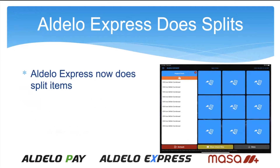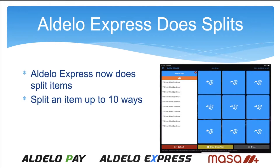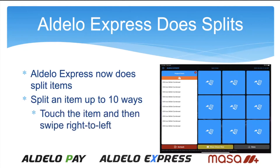We can now do up to 10 splits of an item. To do it, once you're into the split check feature, you simply touch the item and swipe right to left. When you do that, you then touch Share. At that point, the 10-key pad pops up and you enter how many splits you would like to have for that item.